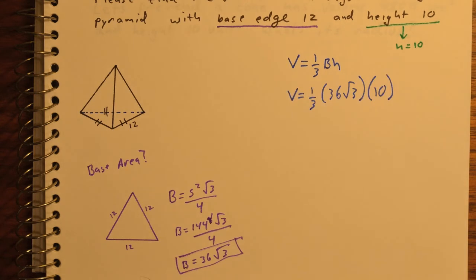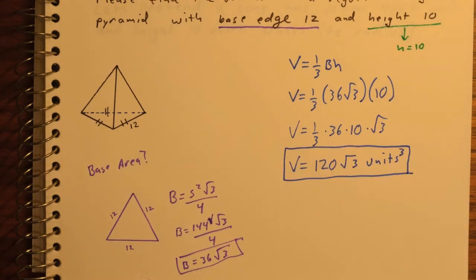So we substitute those values into the volume formula. 1/3 times 36 root 3 times 10, which gives us a volume of 120 root 3 cubic units.